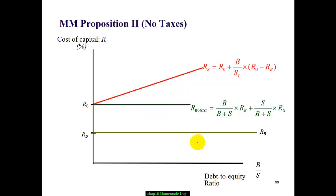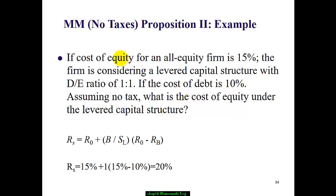From the chart, it's much easier to understand the impact. The horizontal axis is the debt-to-equity ratio and the vertical axis is cost of capital. R_B, the cost of debt, is a bit lower. The green line is the weighted average cost of capital. As the company's debt increases from zero, the cost of equity also proportionally increases — the leverage effect on cost of equity is positive and linearly increasing. For example: if the cost of equity for an all-equity firm is 15%, and the company is considering a levered capital structure with a debt-to-equity ratio of 1 and a cost of debt of 10%, assume no corporate tax — what is the cost of equity under the levered structure?